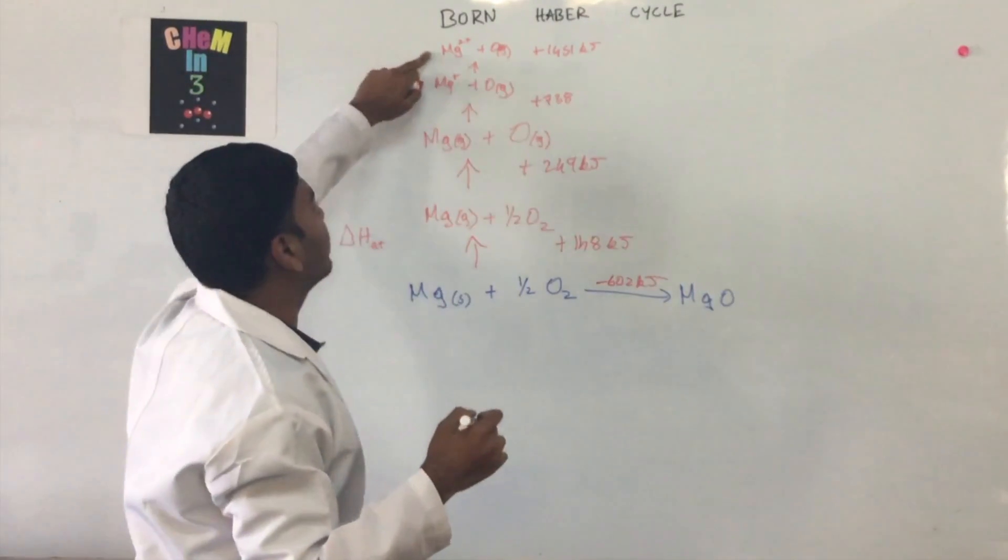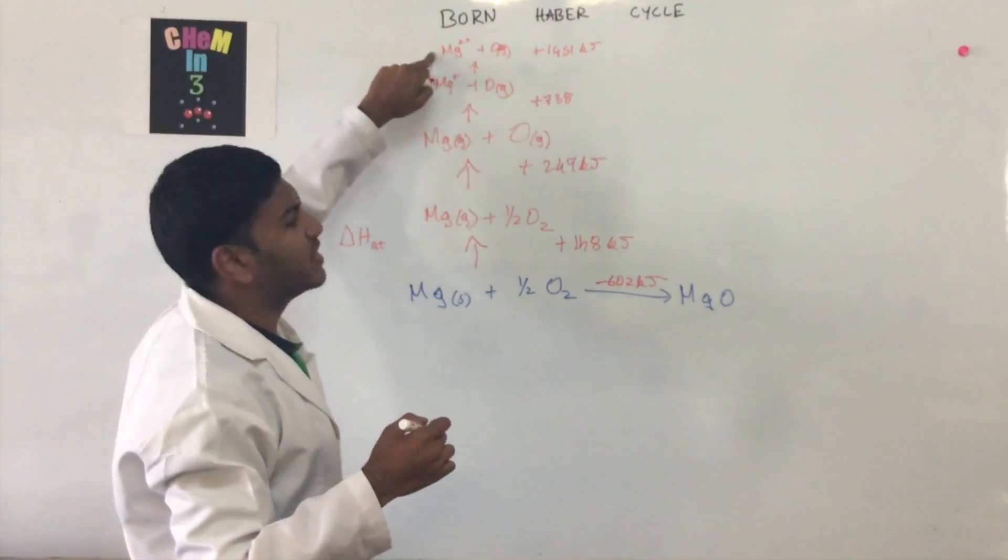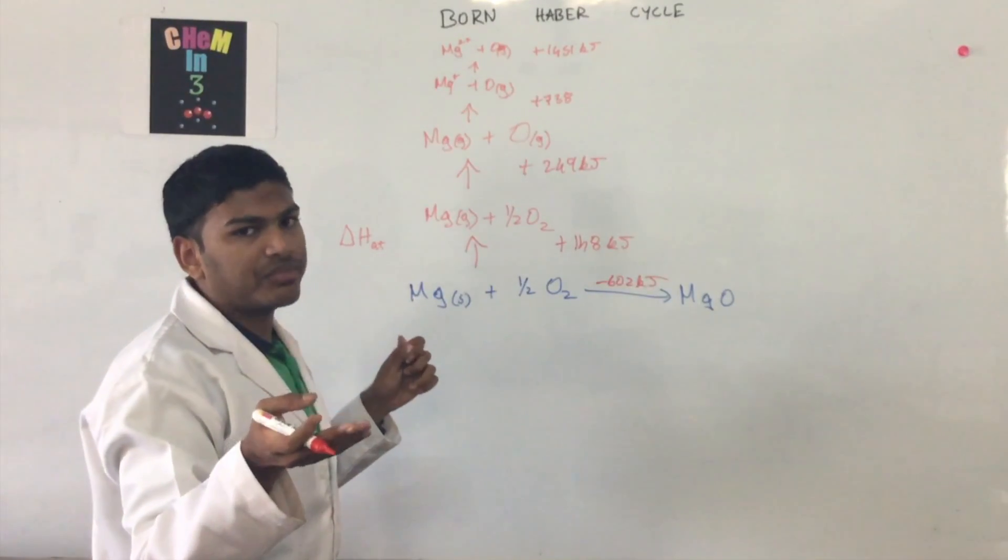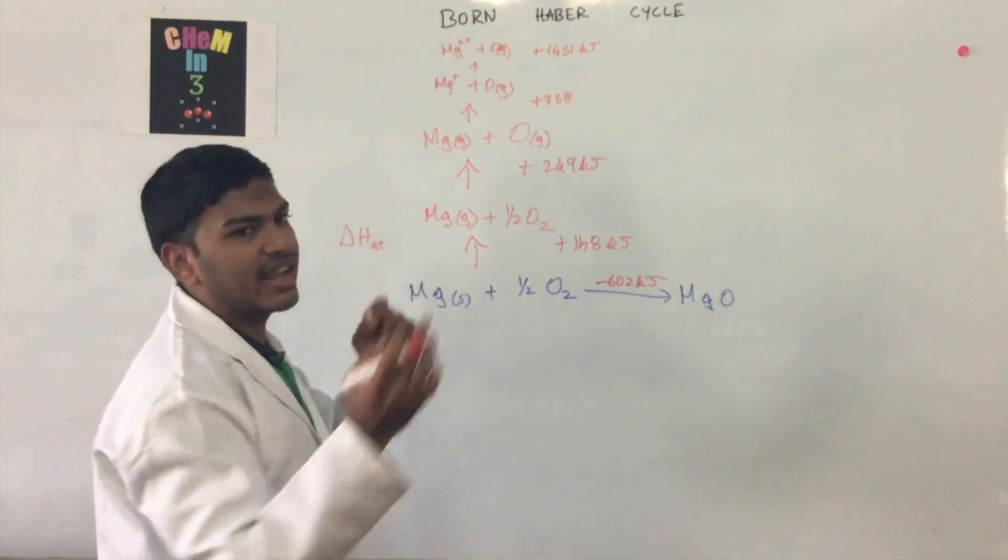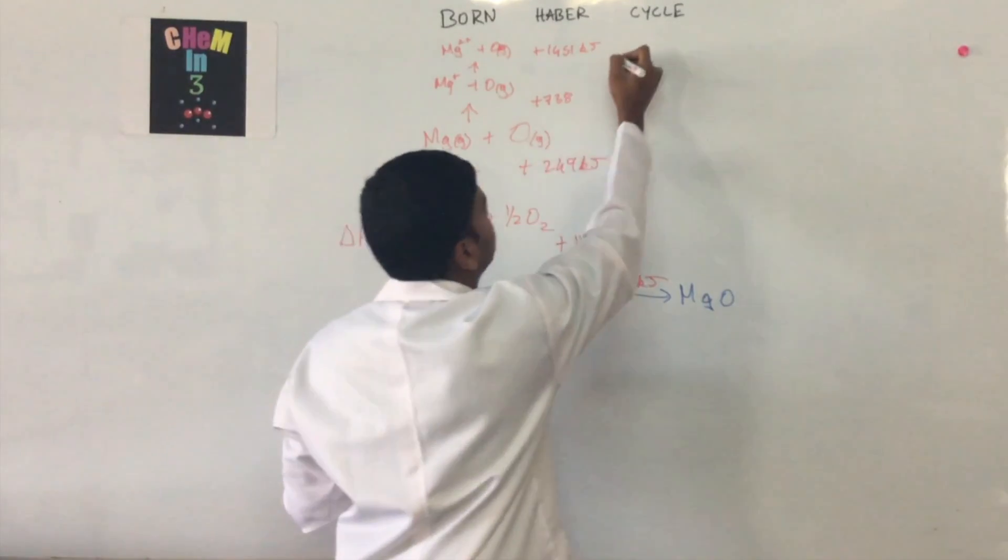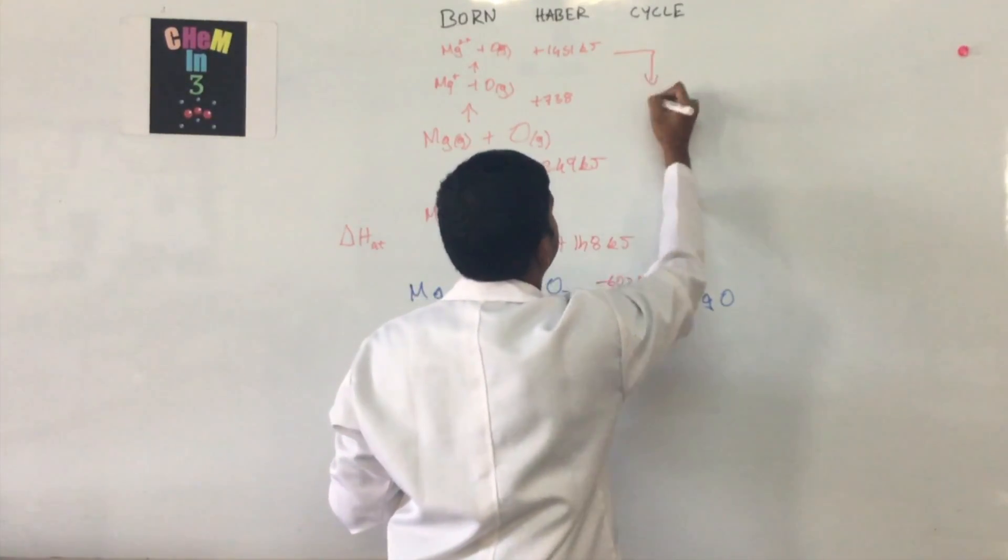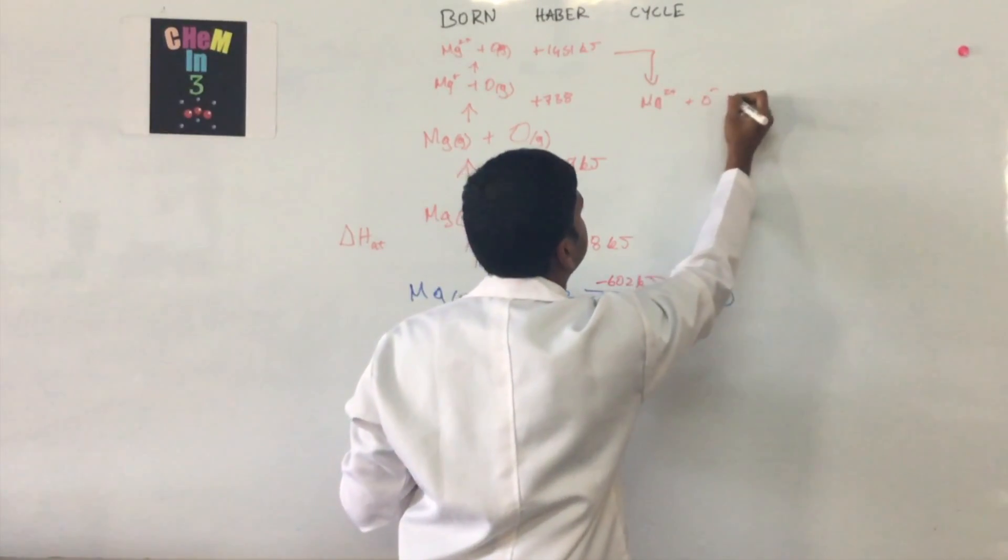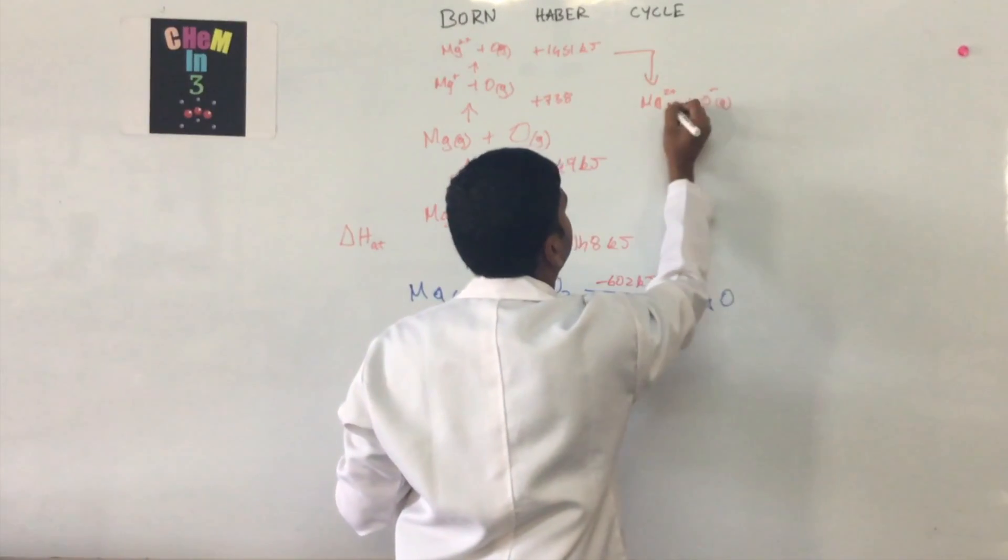So now we have the magnesium ion at Mg2+, and now we have to get oxygen ionized as well. So oxygen takes an electron and this gets it down towards Mg2+ plus O-, both in their gaseous states,